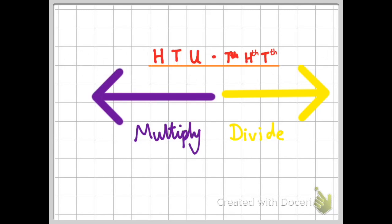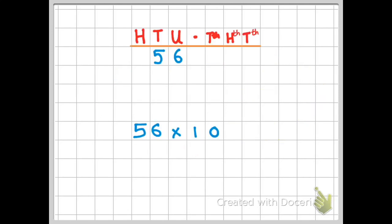The first thing you need to know is that if we multiply numbers they get bigger, so they will go to the left. If I have something in the units column and I multiply it, it might go into the tens or the hundreds column. If I'm dividing, something in the units column might get lower and go into the tenths, hundredths, and thousandths. Let's see how this plays out in real life.